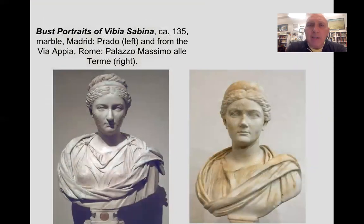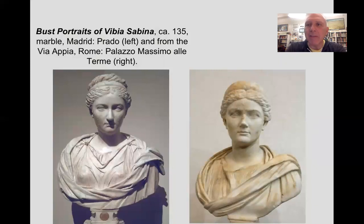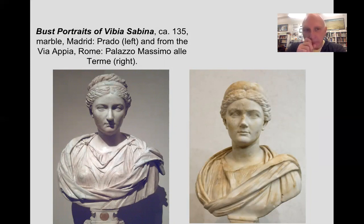Likewise, there are lots of images of his spouse, the famous Sabina, who was a woman of some stature in her own right. She was also an author — she wrote poetry. There are accounts of her having visited on the emperor's travels to Egypt, having visited major ancient monuments and written about those things. There is an account of her writing at the statue of the Colossi of Memnon, and some of her poetry and texts survive. These are images of her — bust portraits of the youngish Sabina, Vibia Sabina — the one on the left in the Prado Museum in Madrid, and the one on the right in the Palazzo Massimo Alle Terme in Rome.